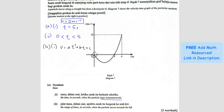The three coordinates we can use are (0, 0), (5, 0), and (6, 12). Using the first coordinate (0, 0): when v equals 0 and t equals 0, we get 0 = 0 + 0 + C, so C equals 0.